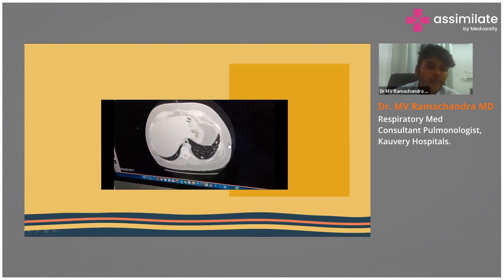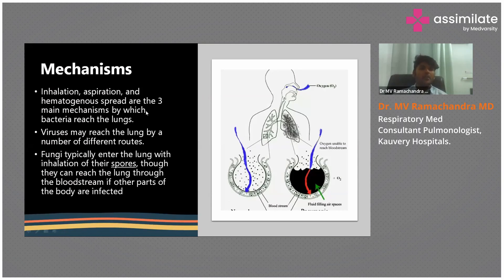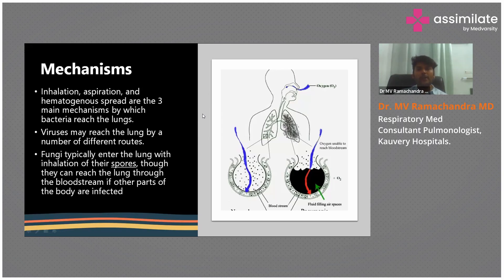Now, the pneumonia mechanism — how does pneumonia spread? Mostly pneumonia spreads by three ways: inhalation, aspiration, and hematogenous spread. Inhalation and aspiration are somewhat different from hematogenous spread.